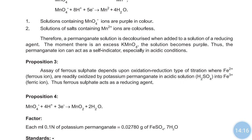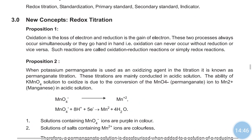That is why this titration is performed in the acidic medium. This is the basic principle behind the assay of ferrous sulfate. Ferrous sulfate follows a permanganometry type of titration. In permanganometry, KMnO4 acts as an oxidizing agent, KMnO4 itself acts as an indicator, and it is carried out in the acidic medium.